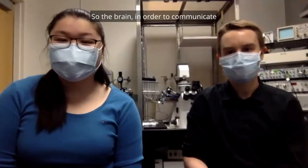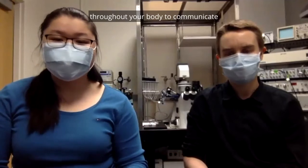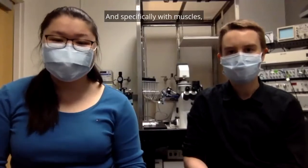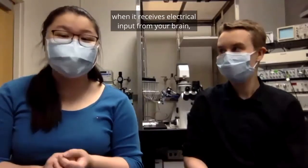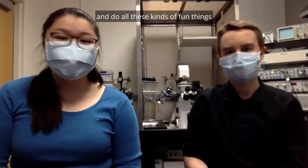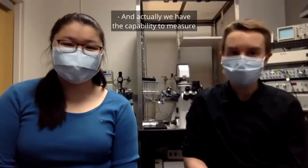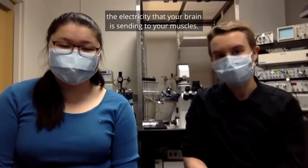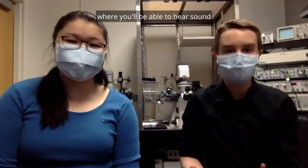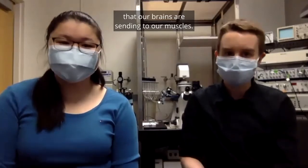So the brain, in order to communicate with the rest of the body, uses electrical signals sent through all your nerves throughout your body to communicate with your muscles and all your organs. Specifically with muscles, when it receives electrical input from your brain, you're able to move your hands and grab something and do all these kinds of fun things. And actually we have the capability to measure the electricity that your brain is sending to your muscles. We're going to do an activity now where you'll be able to hear sound that's produced based on the amount of electricity that our brains are sending to our muscles.